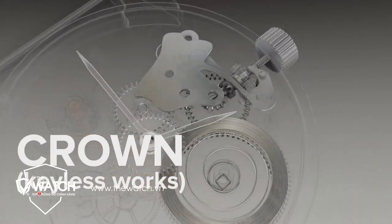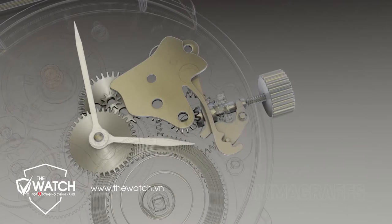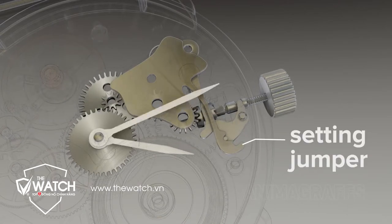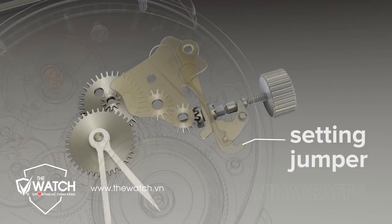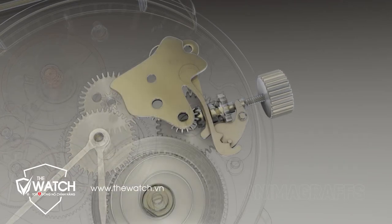The crown. The crown is pulled out to set the time and pushed in to wind the watch. The setting jumper has indents to keep the crown mechanism locked in place. Each mode engages different gear sets.